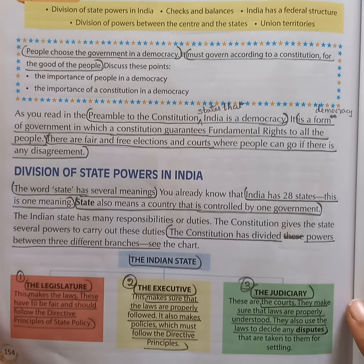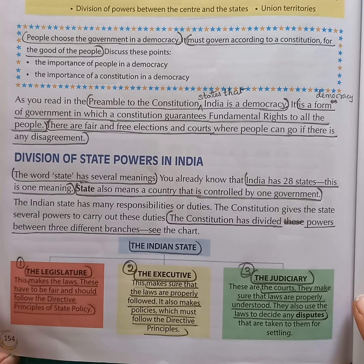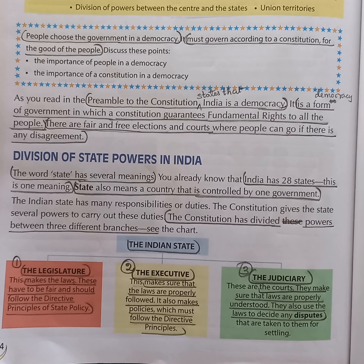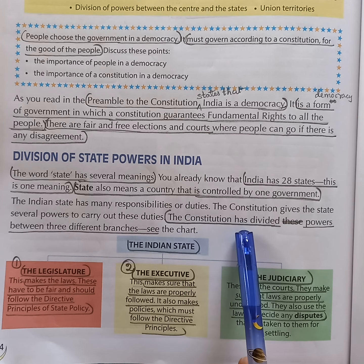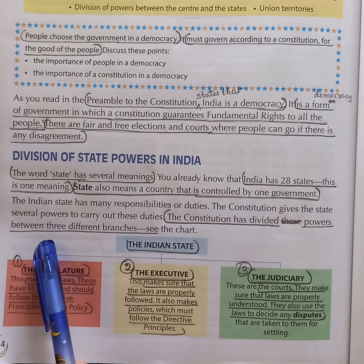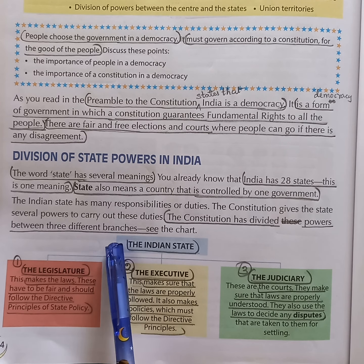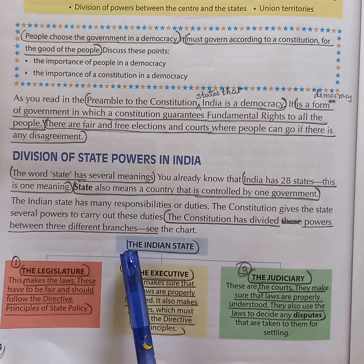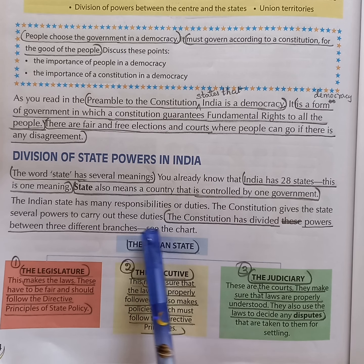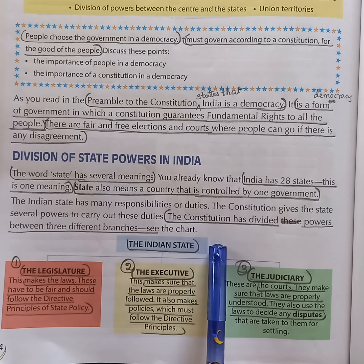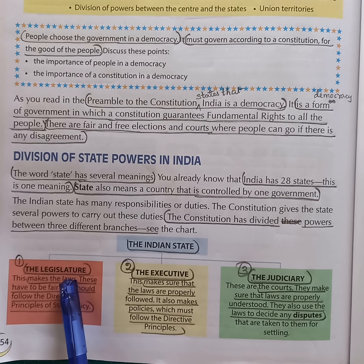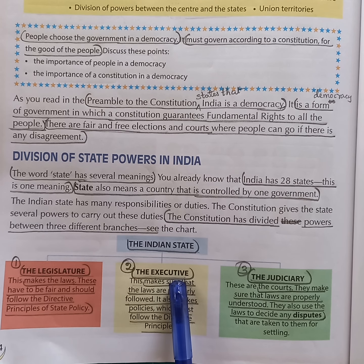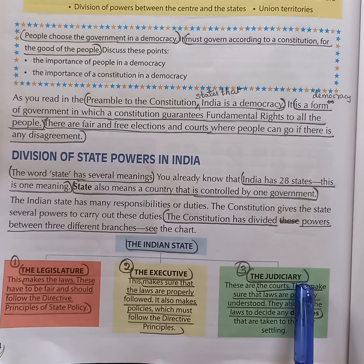Next question: how is power divided according to the constitution between different branches? Answer: the constitution has divided powers between three different branches. The power of the Indian state is divided between the legislature, the executive, and the judiciary.